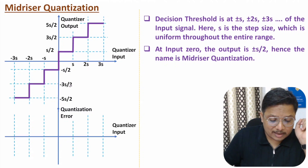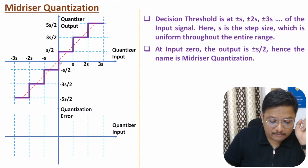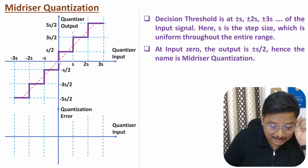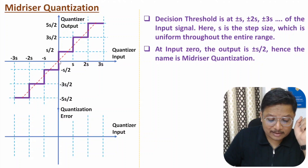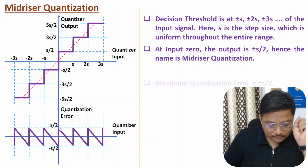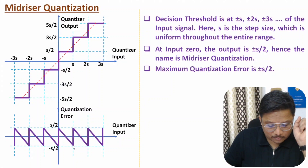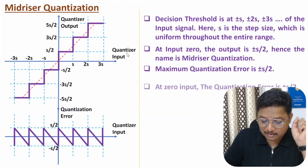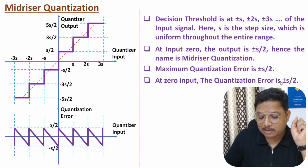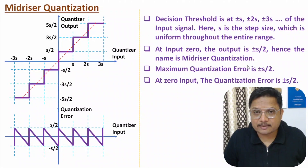Now discussing quantization error for mid-riser: the error is the difference between input and output. Output is plotted as a staircase and input is a linear line passing through center. At zero input there can be error of plus s/2 or minus s/2, as you can observe. As you go in one direction quantization error decreases, then becomes minus s/2, varying between plus or minus s/2. So in mid-riser quantization, at zero input quantization error is plus or minus s/2.